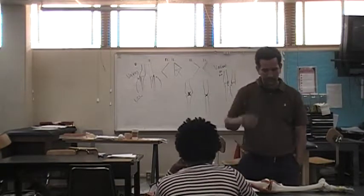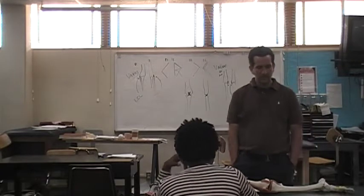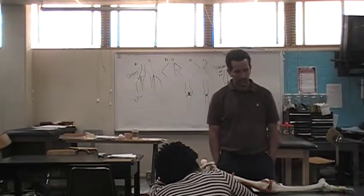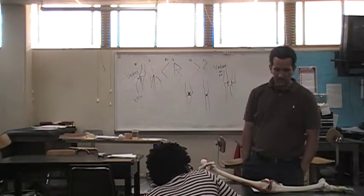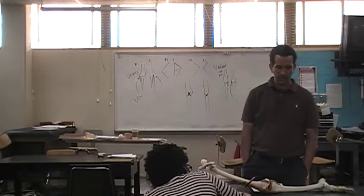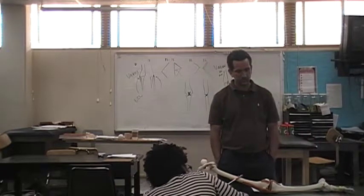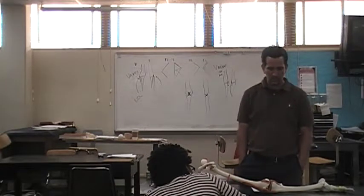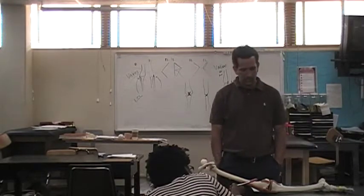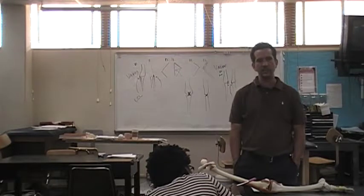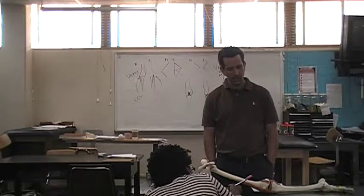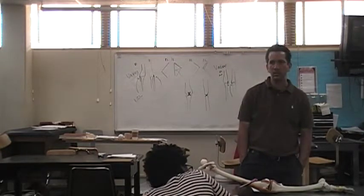The medial meniscus is attached to the ligaments on the anterior and medial side of the knee. Because it's attached to these ligaments, it tends to tear more often compared to the lateral meniscus. The menisci can be torn when the knee is twisted or when one or both menisci become trapped between the femur and the tibia. Both menisci can also be torn when the ligaments around the knee are torn — all of which occurs more often to the medial meniscus.